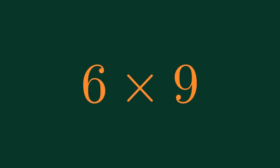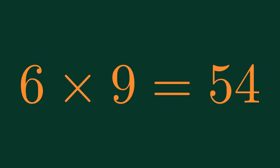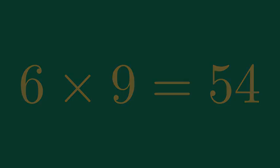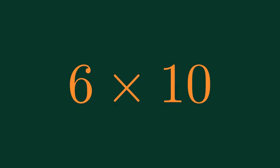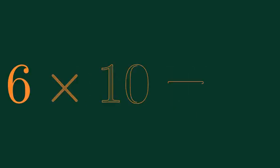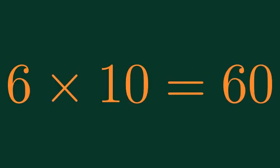What is 6 times 9? 6 times 9 is equal to 24. What is 6 times 9? 6 times 10 is equal to 60.